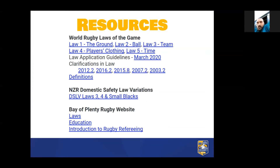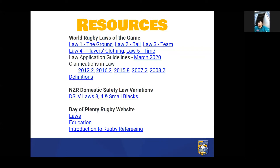Today we're covering five laws. So law one for the ground, law two for the ball, law three for the team, law four for players' clothing, and law five for time. There are a lot of clarifications in law as well, particularly around the team, mostly to do with substitutions and scrums and uncontested scrums, but also some clarifications around clothing. And law application guidelines as well, the most recent set around what happens during scrum and the forcing of uncontested scrum.